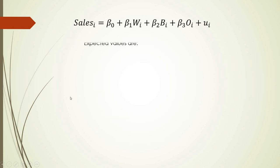Let's look at the complete example here. Expected values are: red cars, expected value of sale will be beta zero. For white cars, it will be beta zero plus beta one. For blue cars, beta zero plus beta two, because blue cars are related to beta two. Orange cars will be beta zero plus beta three. So we won't lose any information about the red cars.